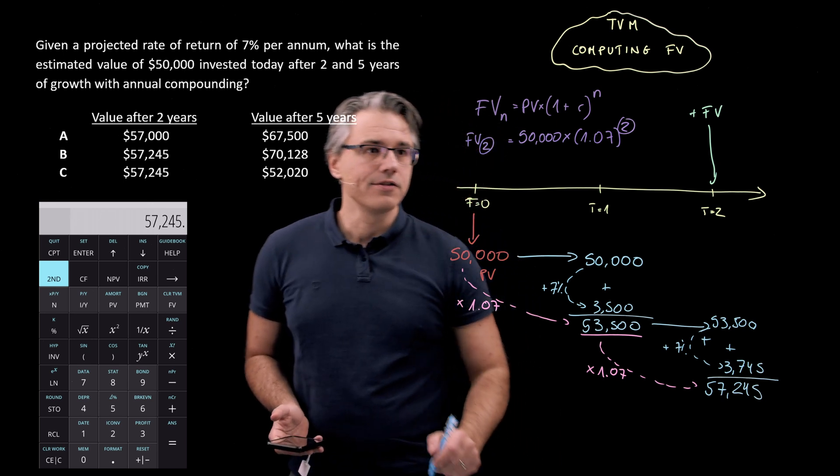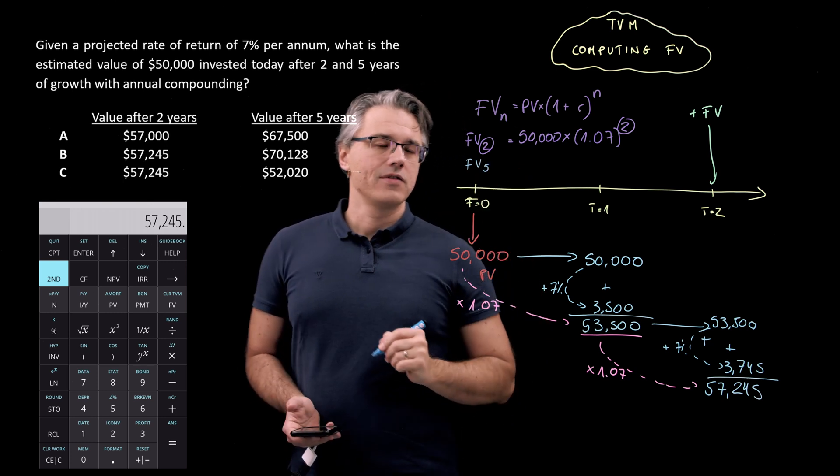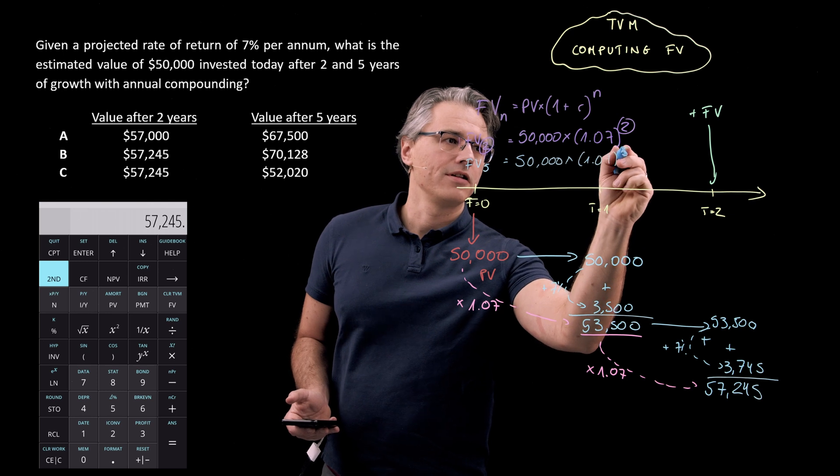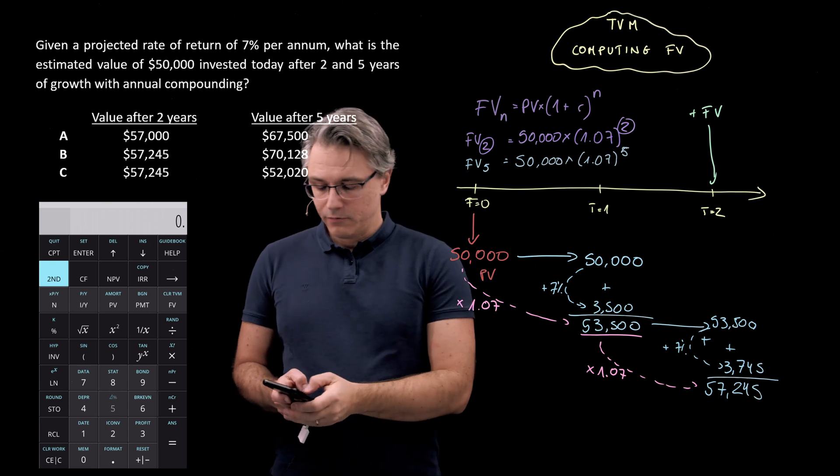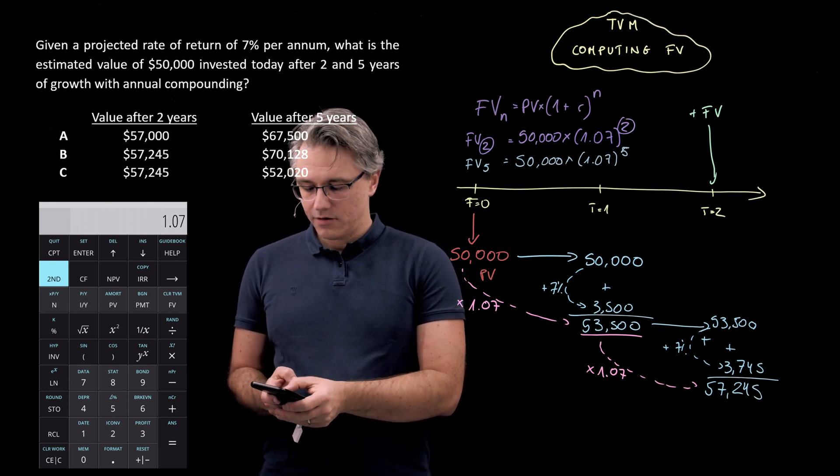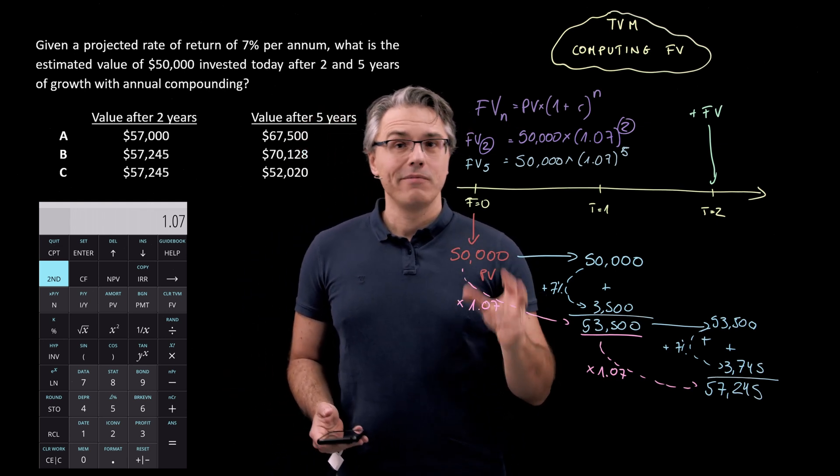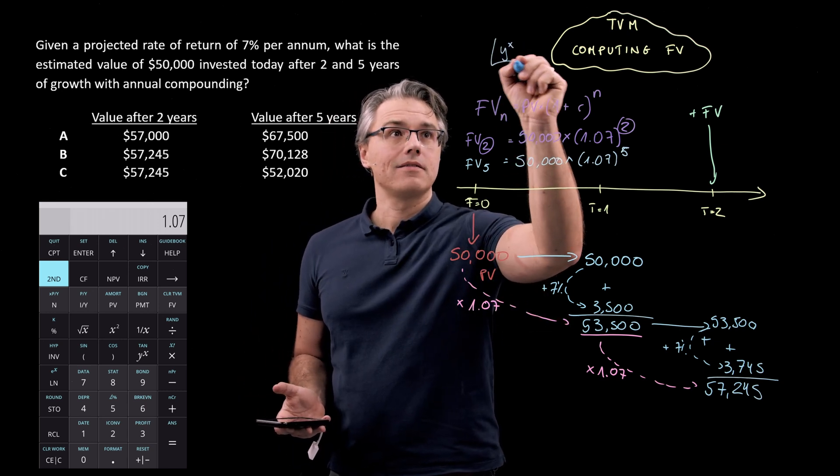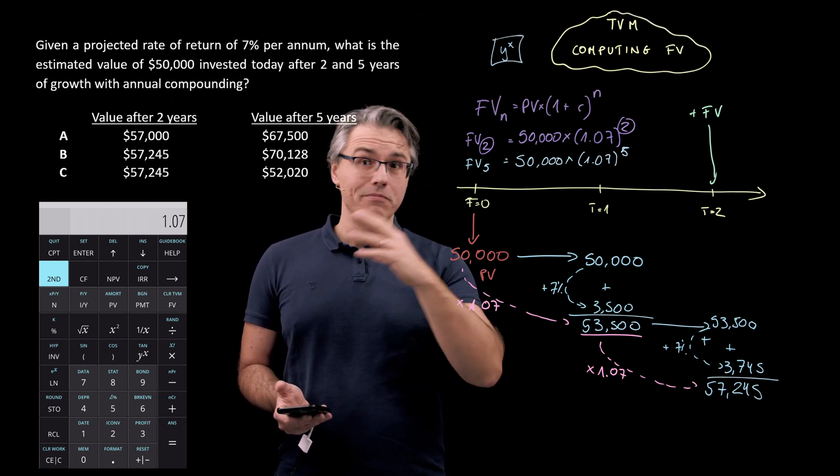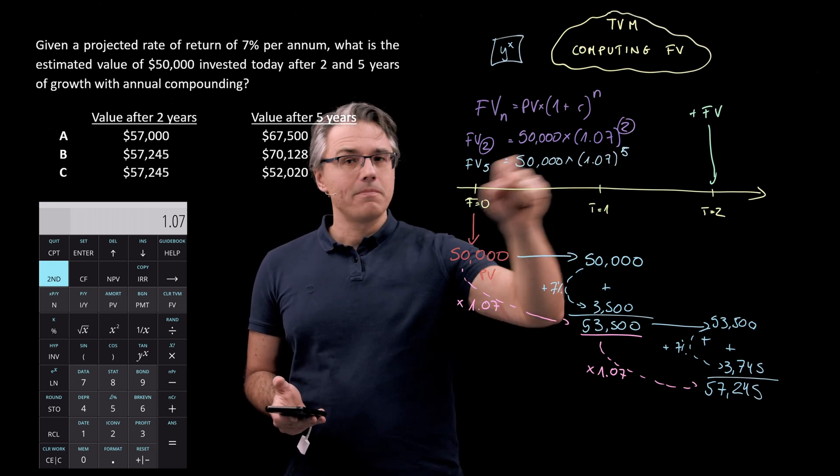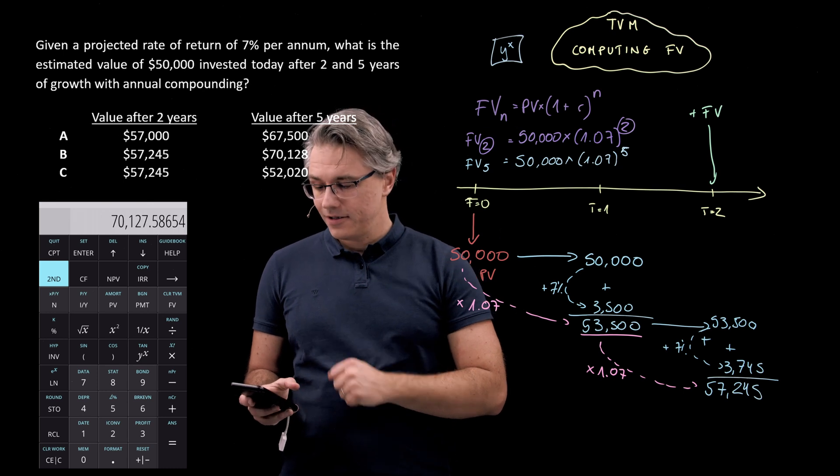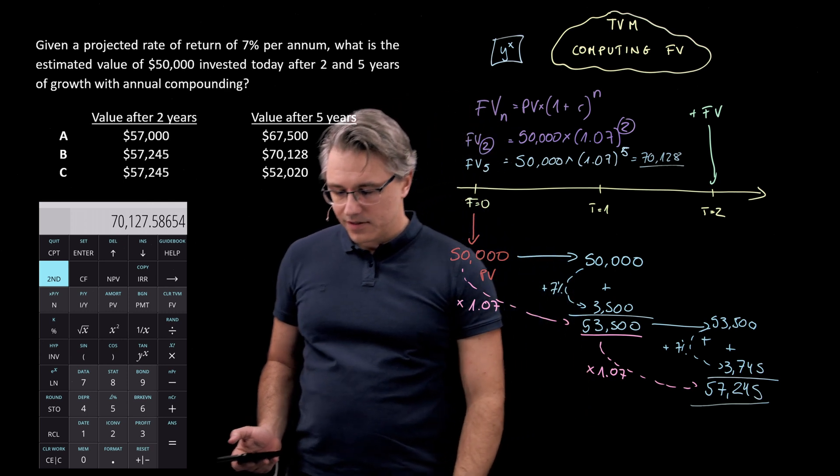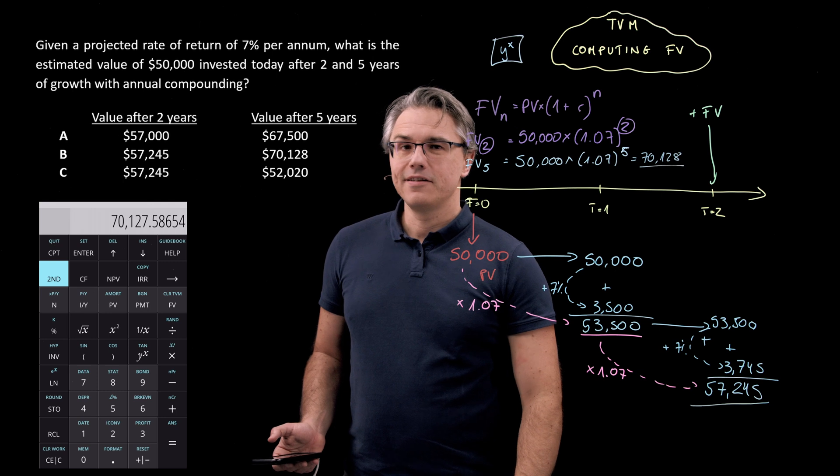We can therefore quite easily also calculate the future value for this problem at the end of year five. So FV5, that's going to require 50,000 times 1.07, but to the power accordingly of five. And let's see how we do this on the calculator. Well, once again, 50,000 times 1.07, and this time, because we're not squaring, we're not raising to the power of two, but to the power of five, I'm going to use a different key. That key is y to the power of x. This key, which sits just next door to the brackets. So press this one, and now input the power to which you want to raise. In this case, it's five and equals. And I'm looking at a result of 70,128. And when you take this number and this number and check this against the answers to the question, you can see that the relevant answer is B.